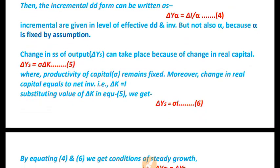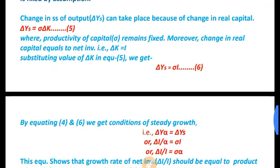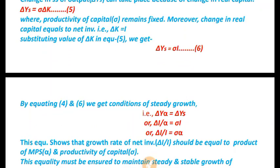The change in supply of output occurs due to the change in real capital. Since sigma (σ) is fixed by assumption, and since the change in real capital equals net investment (ΔK = I), substituting gives: ΔY_s = σ × I. This is the supply-side incremental equation. By equating the demand-side equation (ΔI/α) with the supply-side equation (σ × I), we get the steady growth condition.